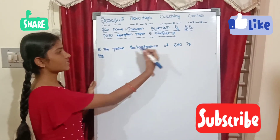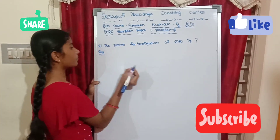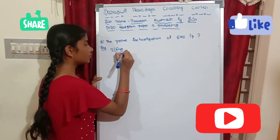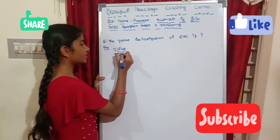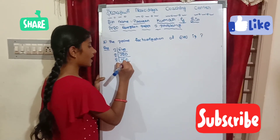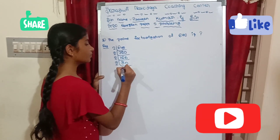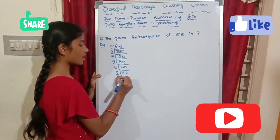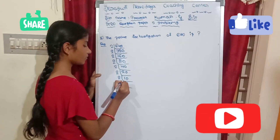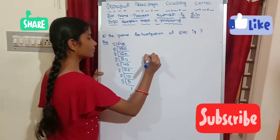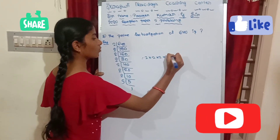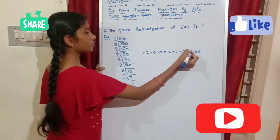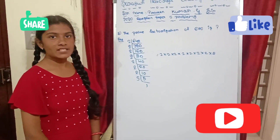Fifth problem: The prime factorization of 640. Dividing 640 by 2 repeatedly: 640, 320, 160, 80, 40, 20, 10, 5. Answer is equal to 2 into 2 into 2 into 2 into 2 into 2 into 5, which is 2 to the power 7 into 5. And don't forget to like, share and subscribe the channel. Thank you.